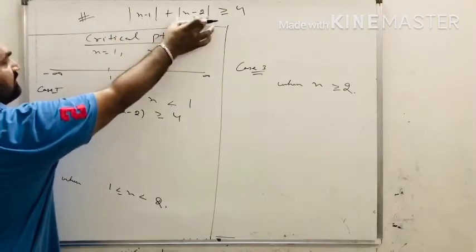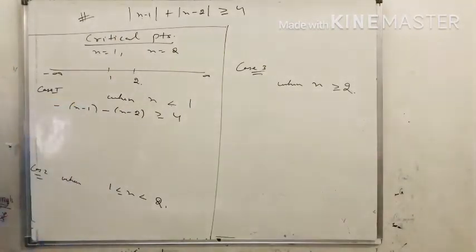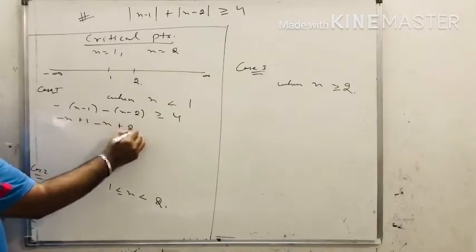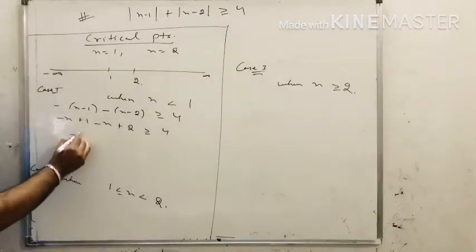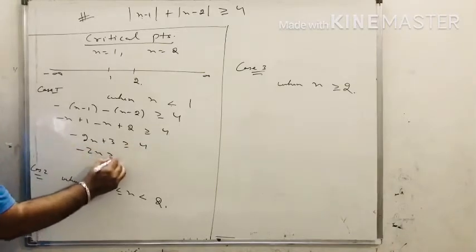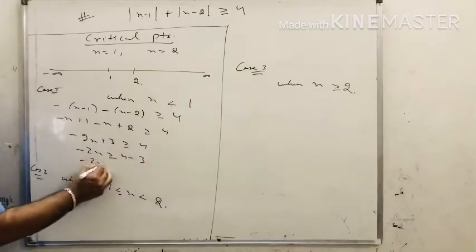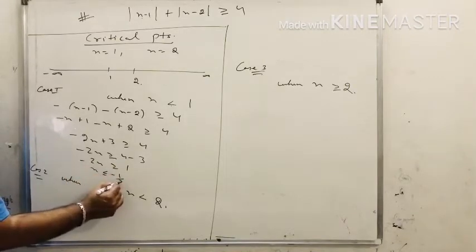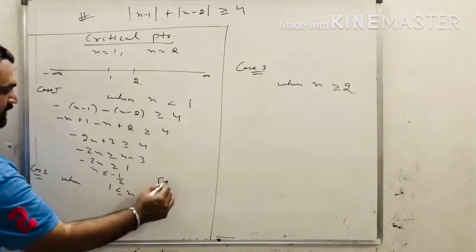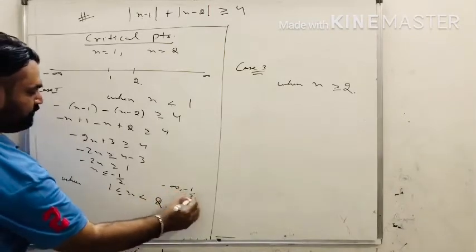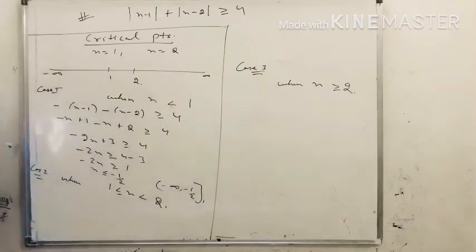With both modulus values negative, we get minus x plus 1 minus x plus 2 greater than or equal to 4. Minus 2x plus 3 greater than or equal to 4. Minus 2x greater than or equal to 1, so x less than or equal to minus 1/2. The interval for case 1 is minus infinity to minus 1/2.